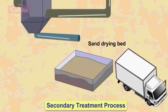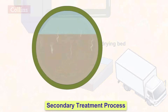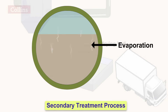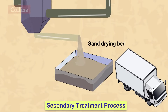The activated sludge is then left in the sand drying beds. Some quantity of water in the activated sludge evaporates and the remaining quantity drains through the sand beds. This leaves behind the remaining dried sludge which can be used for making fertilizers or compost.